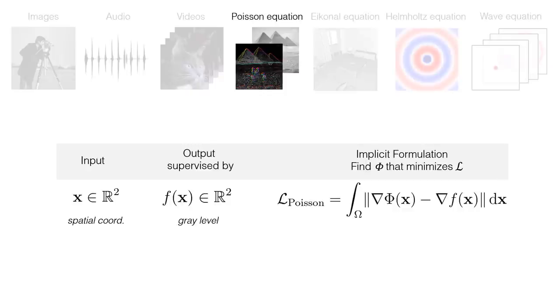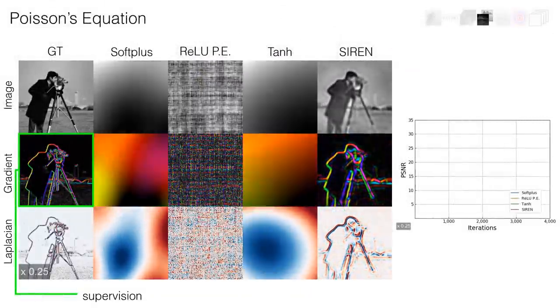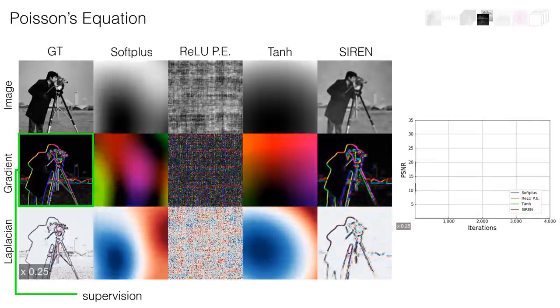In other words, we are looking for a function phi so that its gradient is equal to those of this other function f. Note that in such a scenario, the network phi is never supervised with the actual values of f and is only supervised via its gradient. Hence, the solution is determined only up to an additive constant. By evaluating the network phi at different pixel positions, it performs image reconstruction.